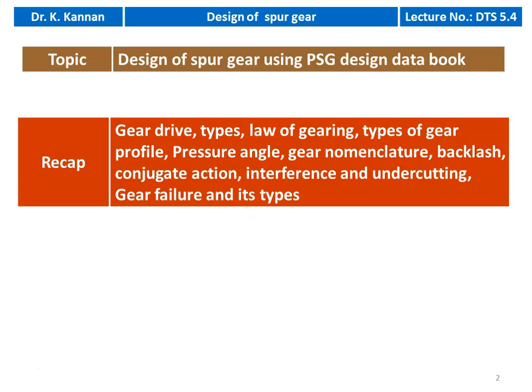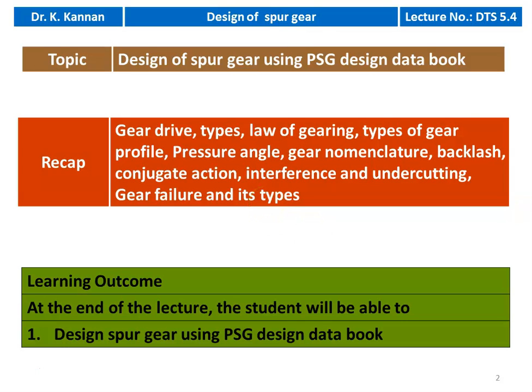In the earlier lectures, we discussed gear drives, types of gear drives, law of gearing, types of gear profile, pressure angle, gear nomenclature, backlash, conjugate action, interference and undercutting, and gear failure and its types — covered in the earlier three lectures on gear design. In this lecture, we are going to discuss the design procedure. The learning outcome: at the end of the lecture, the student will be able to design spur gear using the PSG Design Data Book.